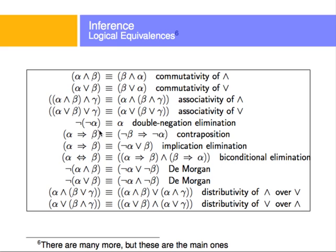Sometimes we need one of these elements on the other side, and we can bring it to the other side by negating the whole thing. Also, if you want to get rid of the implication sign, alpha implies beta is the same as saying not alpha or beta. This is going to be very important later — we'll get rid of the implies sign and have just ORs.